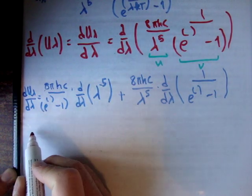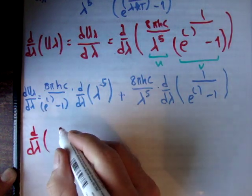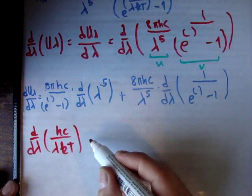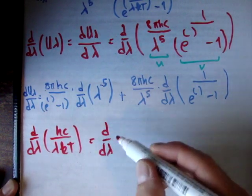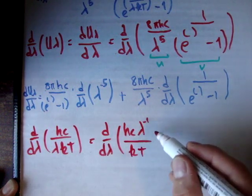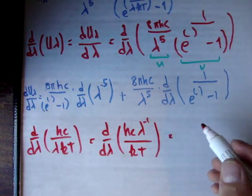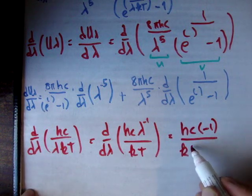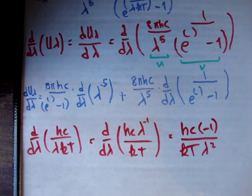So, first of all, dd lambda of hc over lambda kt, that's the exponent of your exponential, is equal to dd lambda of hc lambda to the negative 1 over kt, and that's equal to hc times negative 1 over kt lambda squared. So, remember, you're dropping down by the power. I'm not going to go on to laws of differentiation. So, that's how you would differentiate that exponent.